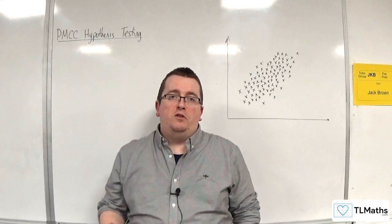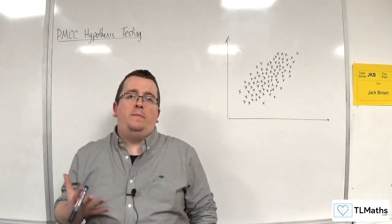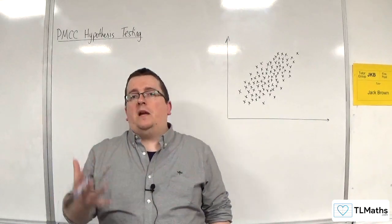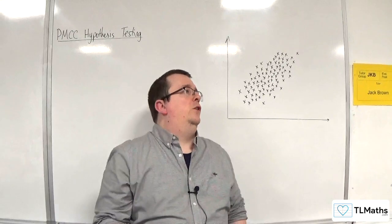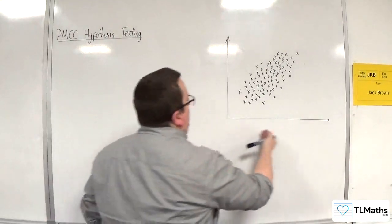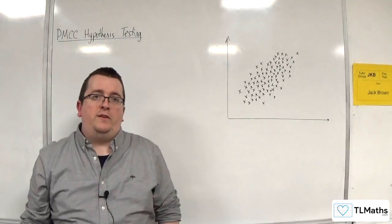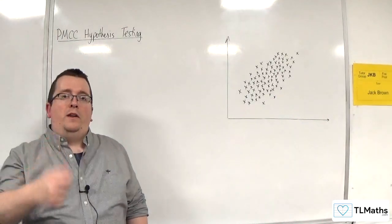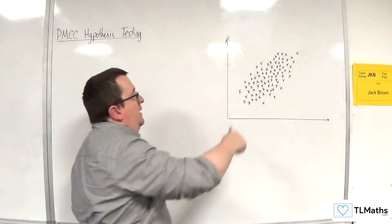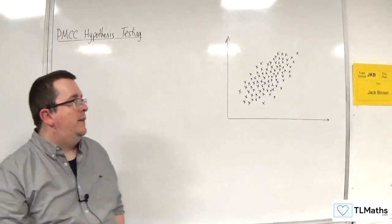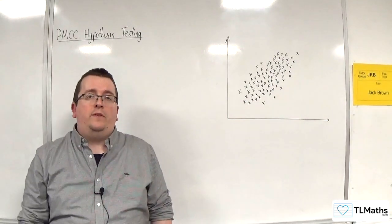When we calculate the product moment correlation coefficient, the two variables that you should be using should be coming from a bivariate normal distribution. So the horizontal axis and the vertical axis variables should be normally distributed. And one of the telltale signs of this is that the data is elliptically shaped, so it's the shape of an ellipse. And we've seen that previously, we've discussed that in previous videos.